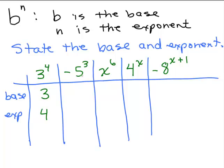Now for this next one, we have to be careful. The base is only the 5. You could think of this as negative 1 times 5 cubed, or you could think of it as the opposite of 5 cubed. But be very careful — the minus sign is not part of the base. So the base in this problem is 5 and the exponent is 3.